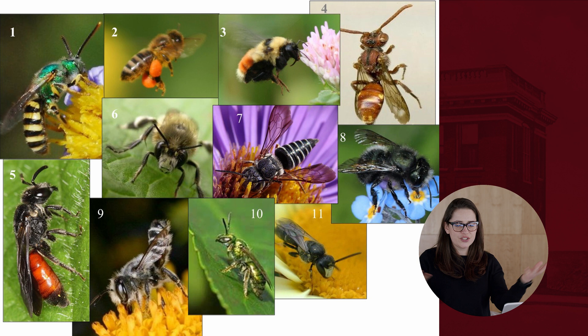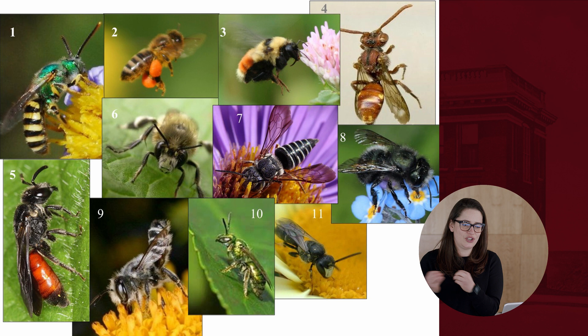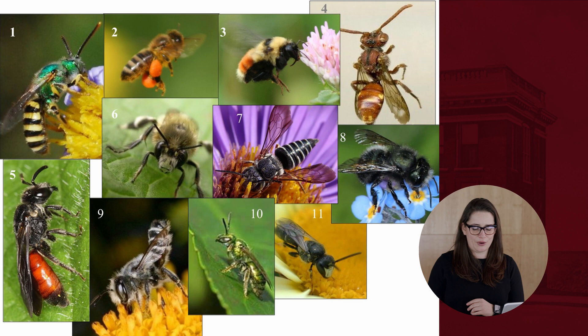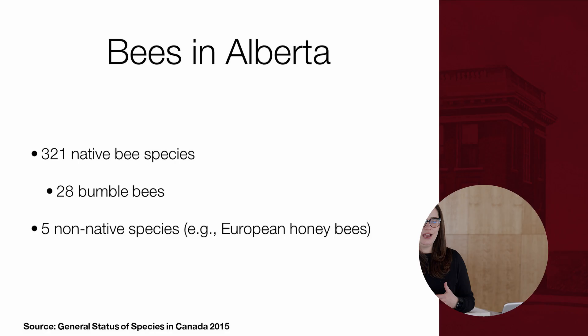Bees come in all different shapes, colors, and sizes — and these are bees found right here in Alberta. We have red bees, blue bees, striped bees, hairy bees, and shiny bees. In Alberta, we have 321 native bee species on record — almost twice as many as all mammal, fish, amphibian, and reptile species combined. It's an incredible amount of diversity.